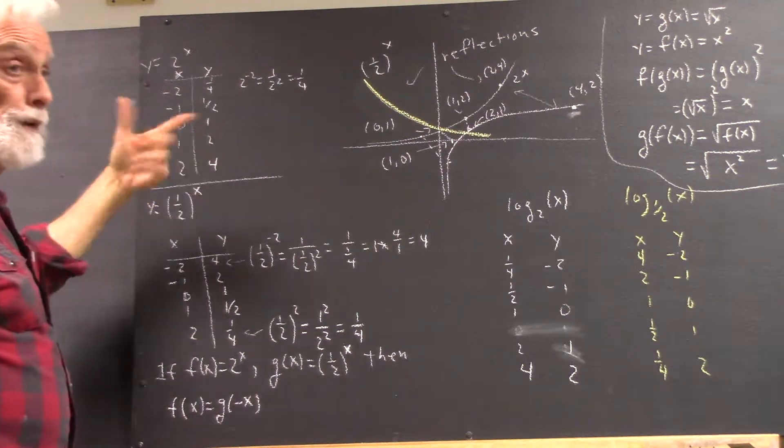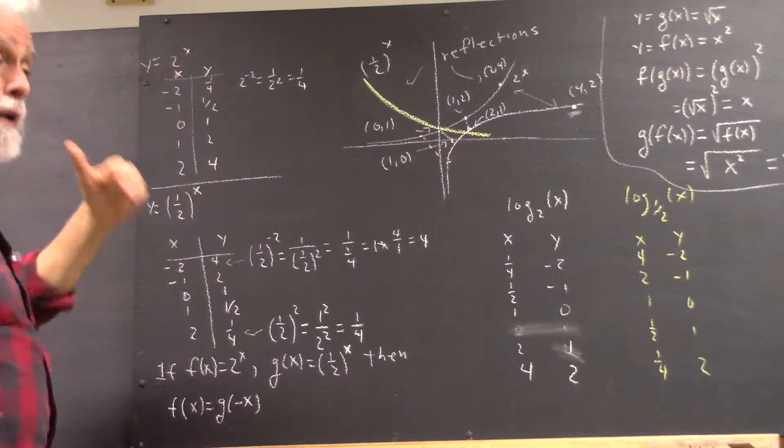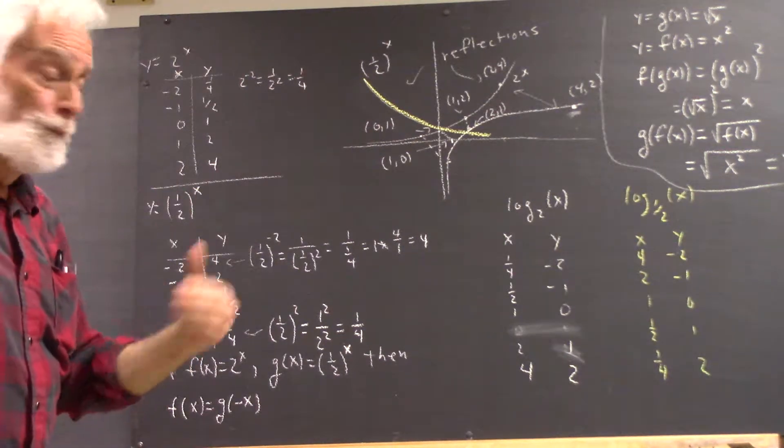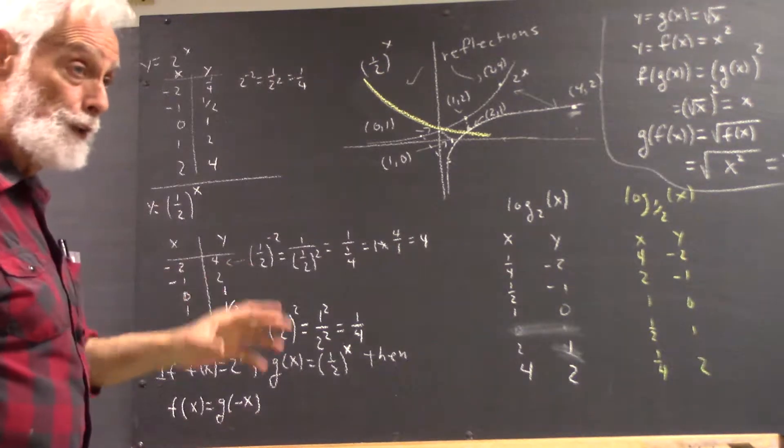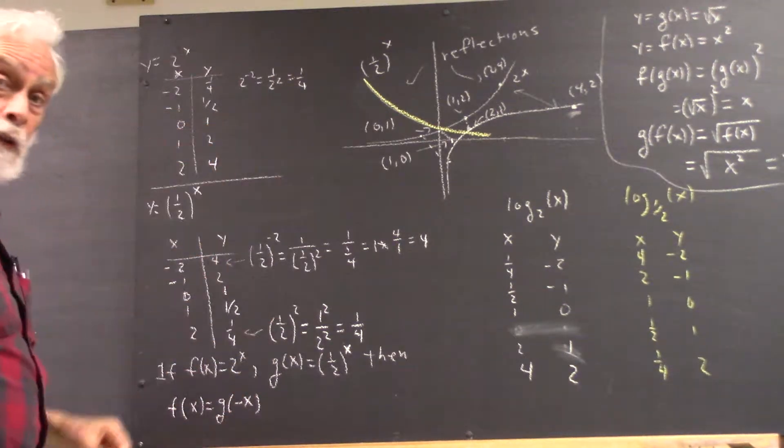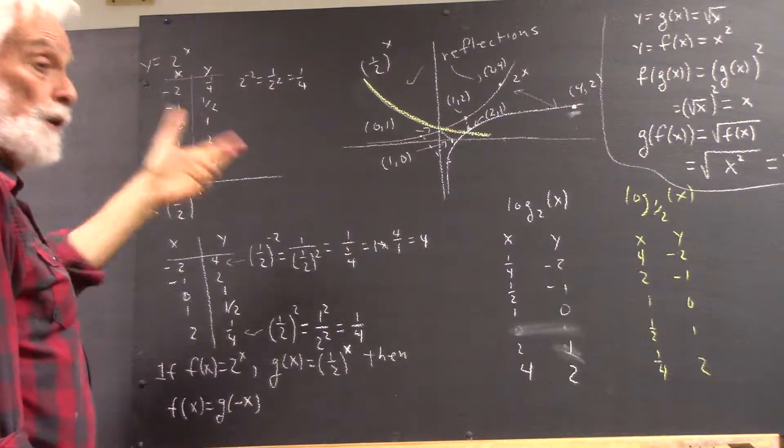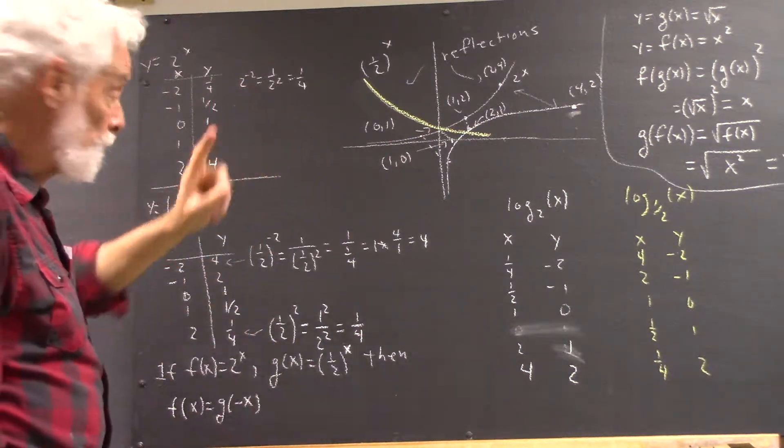And 2 to the 0 is 1, not 0, because any number to the 0 has to be 1. There are reasons with the consistency of the laws of exponents why that has to be the case. But any number to the 0 is 1, including 0. 0 to the 0 is 1.